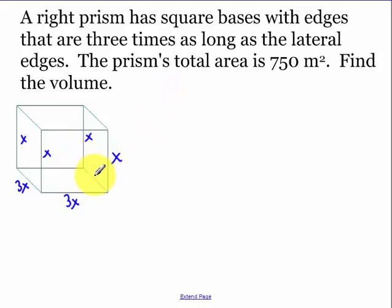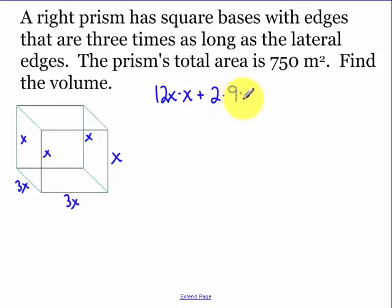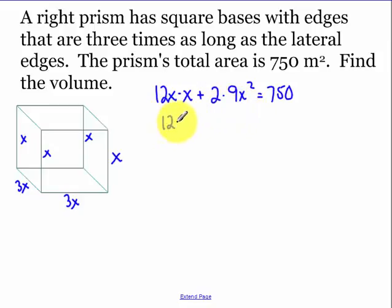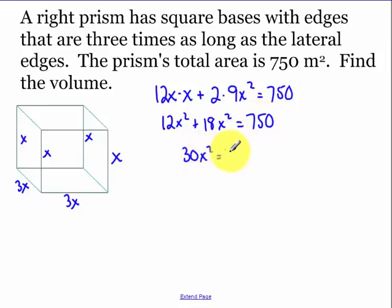Total area equals lateral area plus twice the base area. The lateral area is the perimeter of the base — which is 12x — times the height x. Twice the base area is 2 times 9x², which is 18x². So 12x² plus 18x² equals 750, giving us 30x² equals 750.